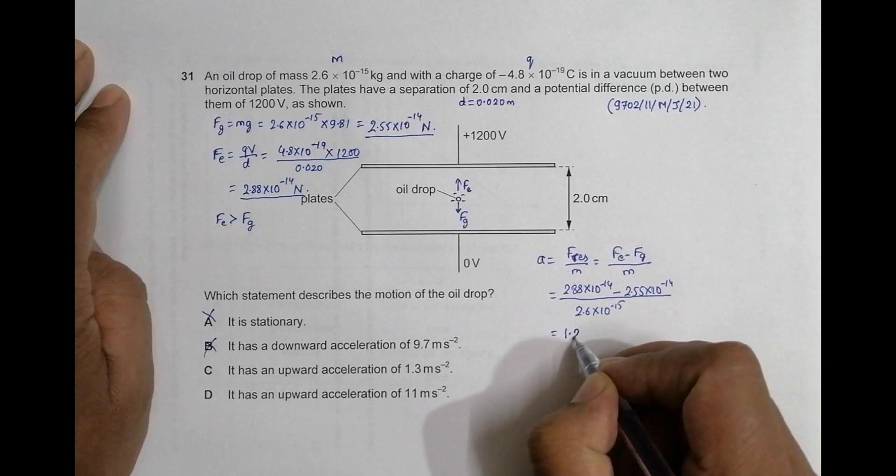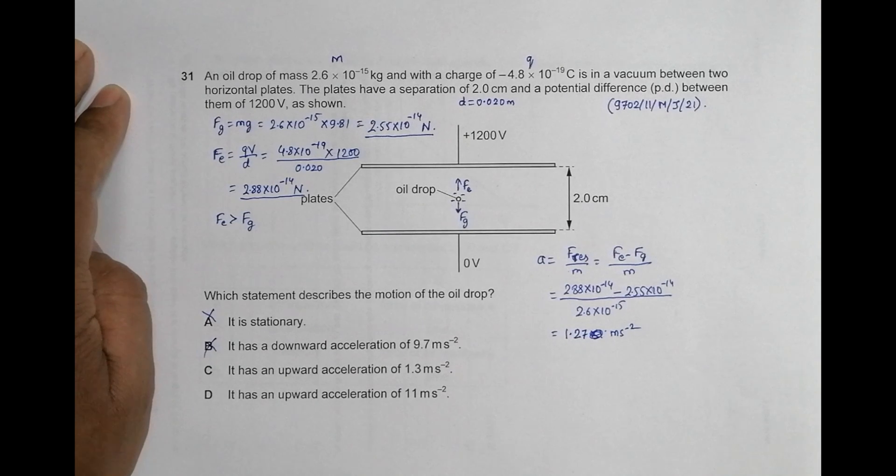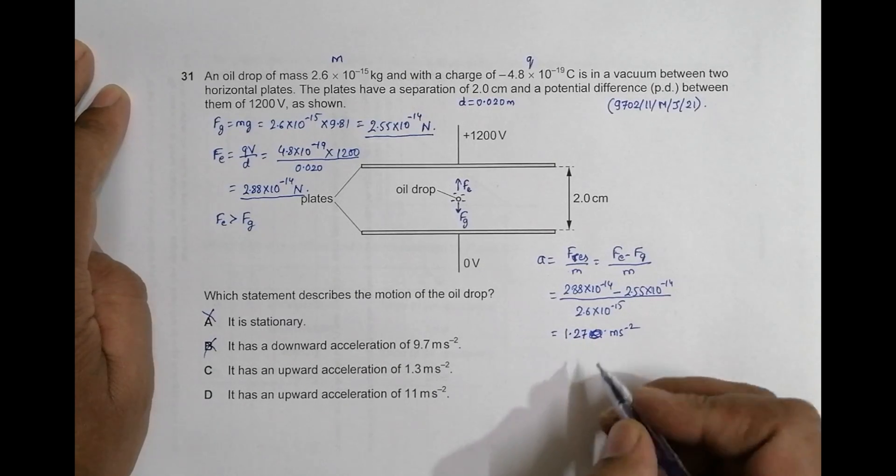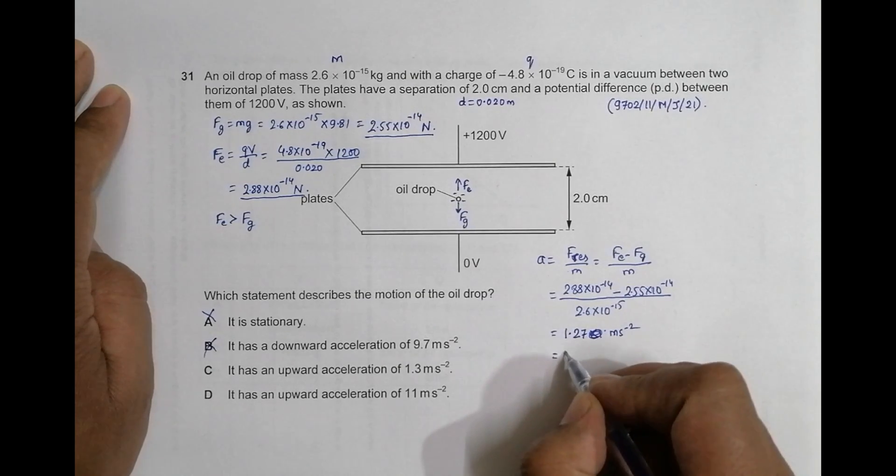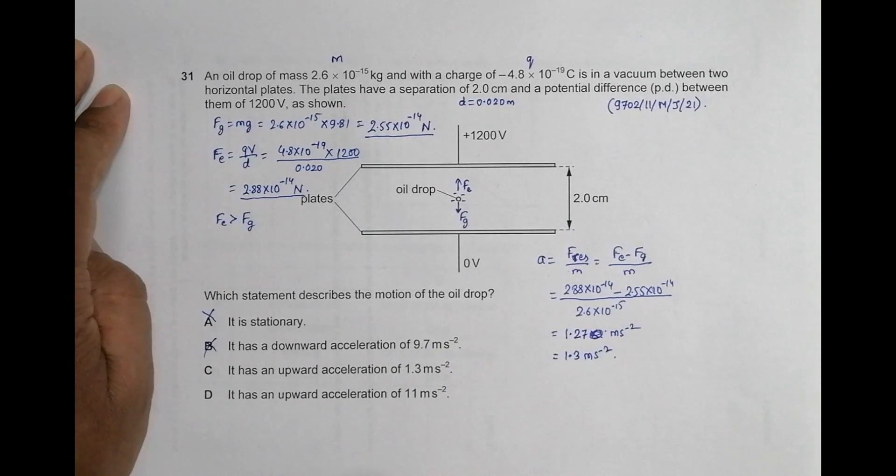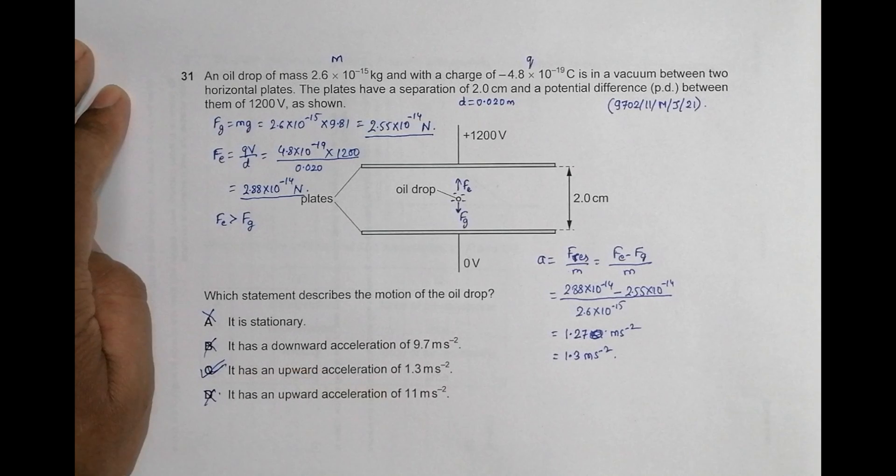This is 1.27 meter per second squared. There are many digits there, so I rounded it to 1.27. So this is equal to 1.3 meter per second squared. This gives the answer as choice number C, and choice number D is incorrect. So C is the proper choice.